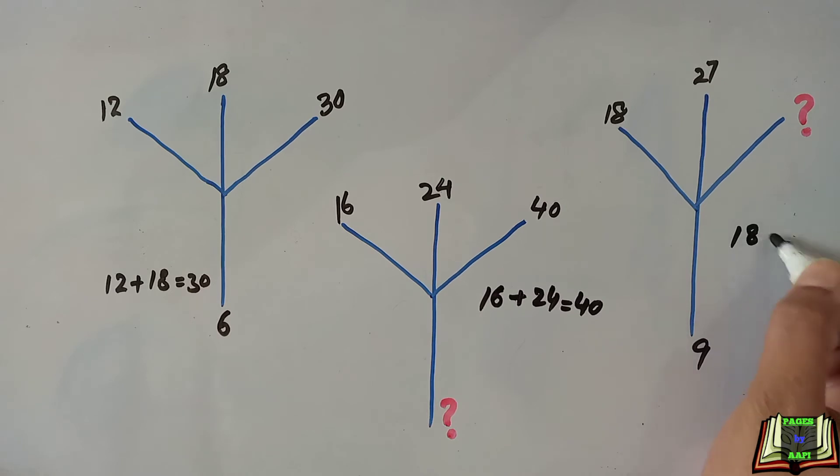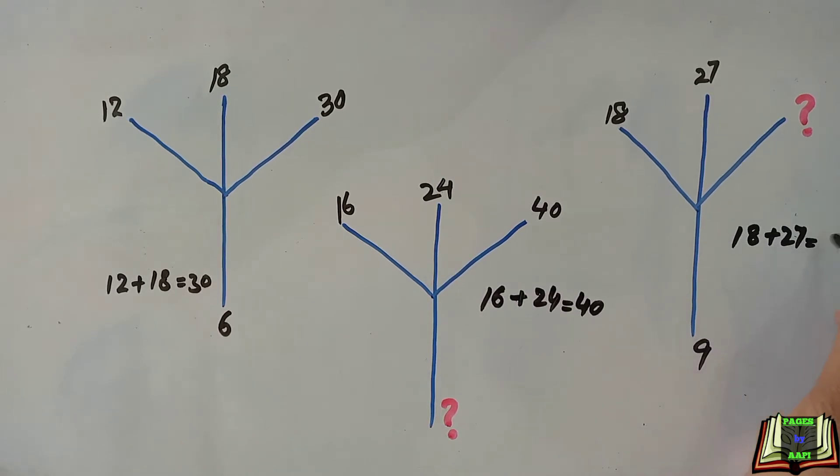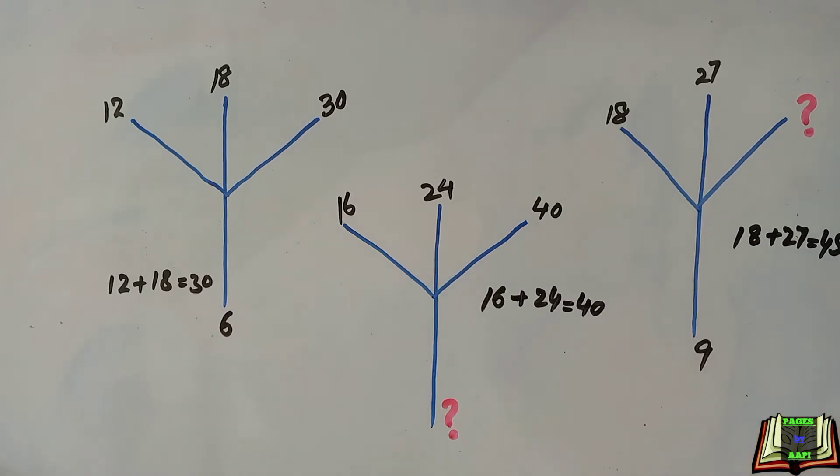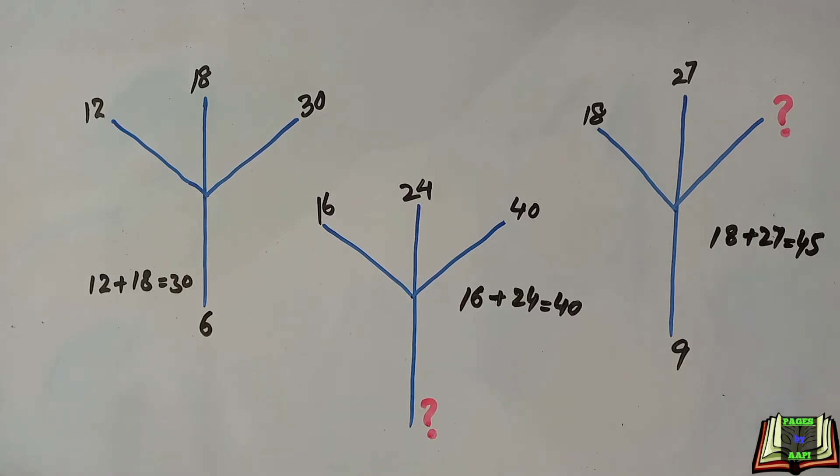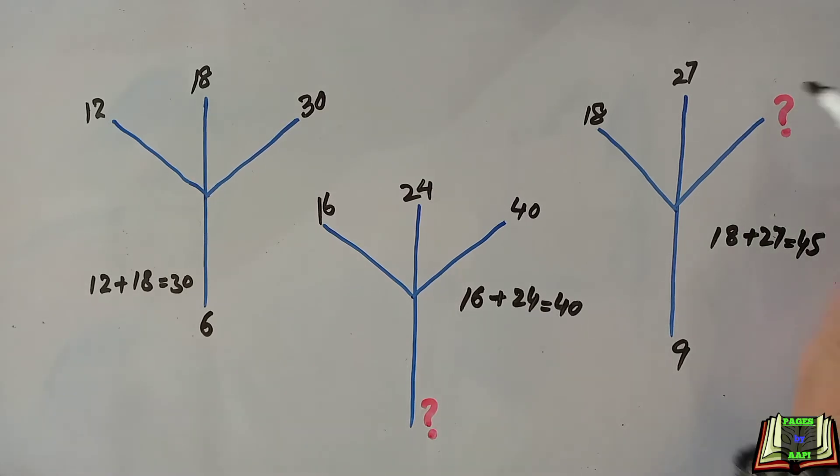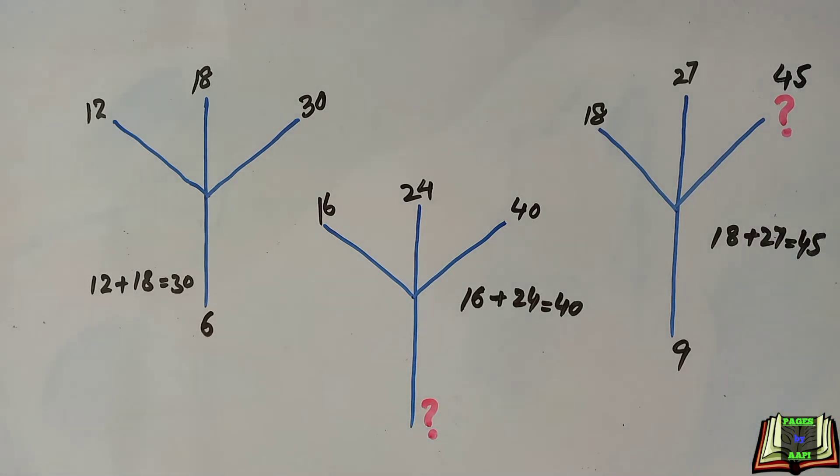18 plus 27, then we will get 45 and this 45 will replace the question mark. So here comes the first unknown number which is equal to 45. It shows that here the pattern a plus b is equal to c is used.